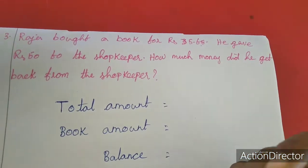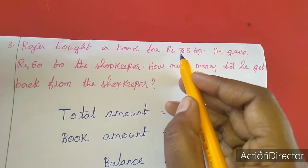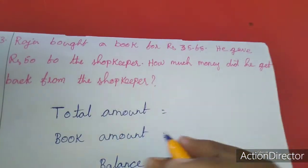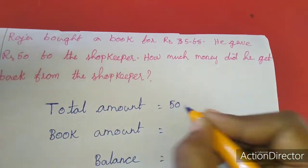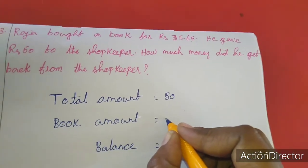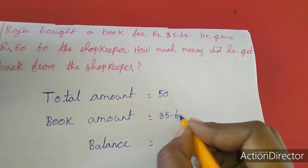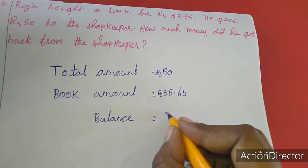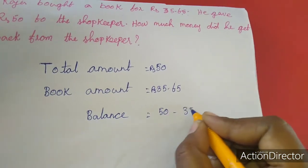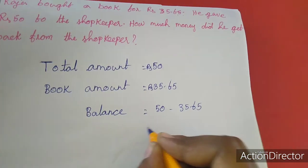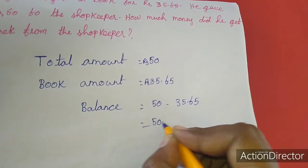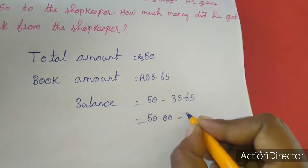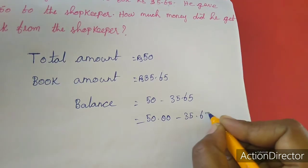How much money did he got back from the shopkeeper? So balance, so total amount minus the book cost amount is subtraction number. So total amount is 50, book amount is 35.65. You have to write rupees also. So balance equal to 50 minus 35.65. Here dot after we have two digits, so I am going to add two zeros here. 50.00 minus 35.65.